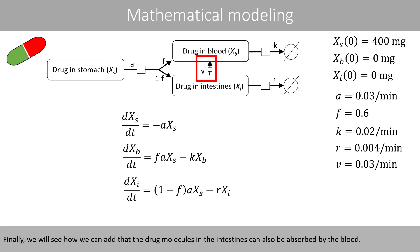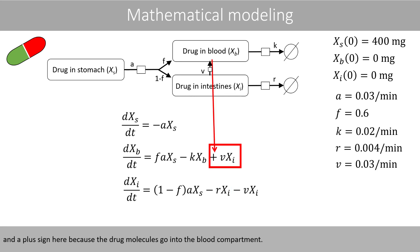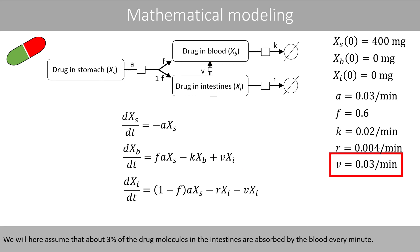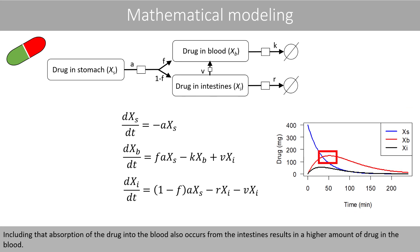Finally, we'll see how to add that the drug molecules in the intestines can also be absorbed by the blood. Since the arrow points away from the intestines compartment, we use a minus sign there and a plus sign for the blood compartment. We assume that about 3% of the drug in the intestines is absorbed by the blood every minute. Simulating this system shows that including absorption from the intestines results in a higher amount of drug in the blood.